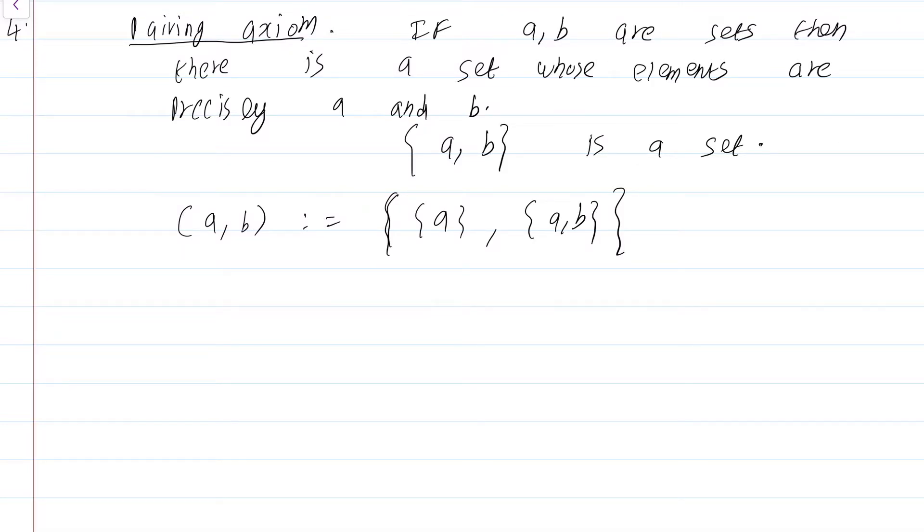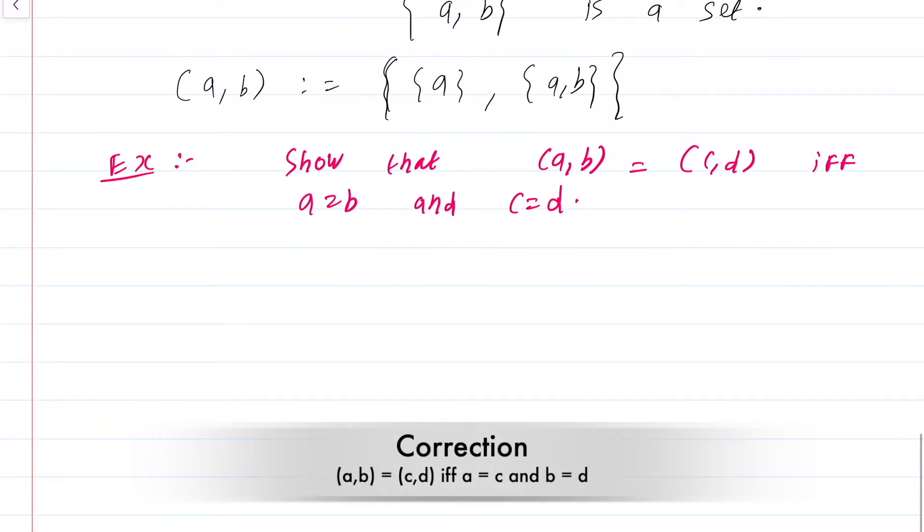So, it is a set of two elements. One of the elements is just the set with a and the other element is the set with a, b. Now, why does this define the ordered pair? Well, it is an exercise. Show that (a, b) is equal to (c, d) if and only if a is equal to c and b is equal to d. Recall from the module on functions and relations that we need ordered pairs to define a relation in turn to define a function. So, this is in some sense one of the most important axioms because this allows us to define functions.